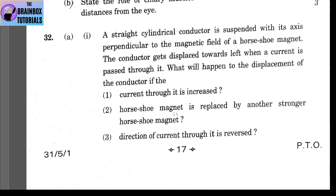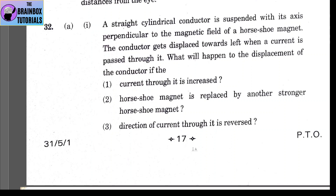Question 32, Part A, Part 1: a straight cylindrical conductor is suspended with its axis perpendicular to the magnetic field of a magnet. When current is passed through the conductor in the magnetic field of a horseshoe magnet, the conductor gets displaced towards the left. If the current through it is increased, the displacement also increases.